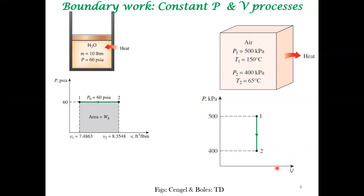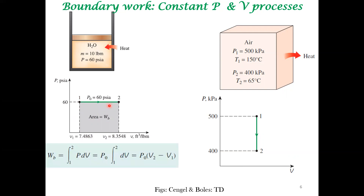In contrast, consider heat input to the system that causes the volume to increase while pressure remains constant — an isobaric process. The boundary work is P·dV, and on the P-V diagram it is the area under the straight horizontal line at constant pressure P₀, as volume changes from V₁ to V₂. This is a case we encounter frequently in thermodynamics, especially in first law analysis. The volume can also be expressed as specific volume times mass.